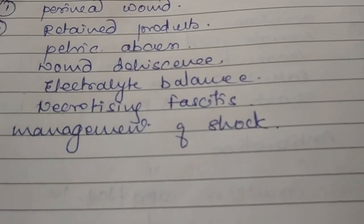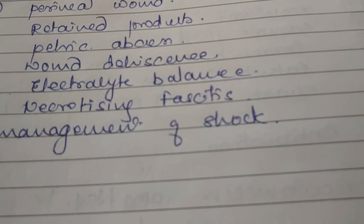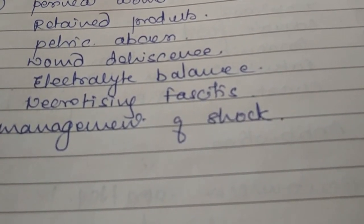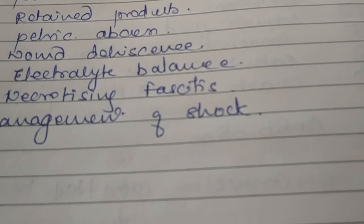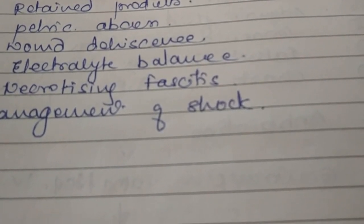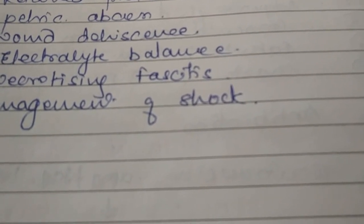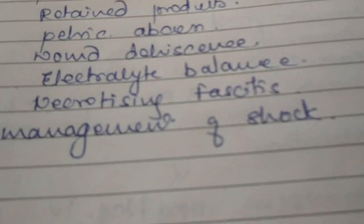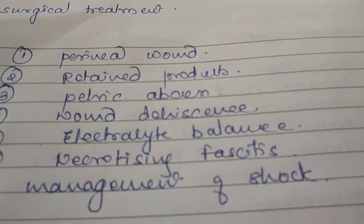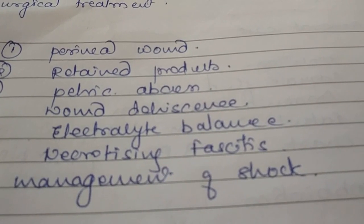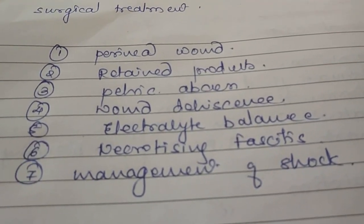Necrotizing fasciitis is a rare but fatal complication of wound infection. Risks are higher in diabetic, obese, and hypertensive patients. It is caused by hemolytic Streptococcus and is often polymicrobial. Treatment involves wound scrubbing, debridement of all necrotic parts, and antimicrobial agents. Shock management includes fluid and electrolyte balance, respiratory support, circulatory support, infection control, and specific management such as hemodialysis for renal failure.